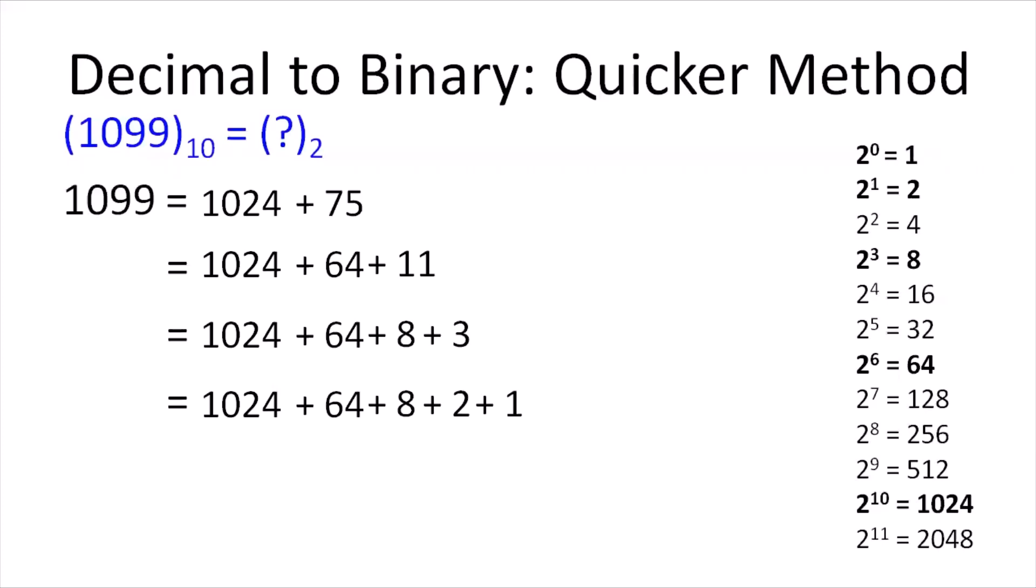After this, we list the position and widths of the binary numbers. That is, the powers of 2 from right to left as given in red in the figure. Now, taking a look back to the expression, we find that we have 1×1024, 1×64, 1×8, 1×2, and 1×1.